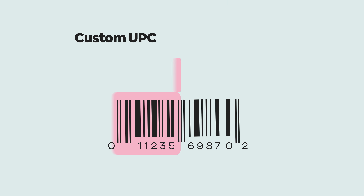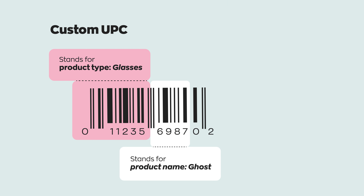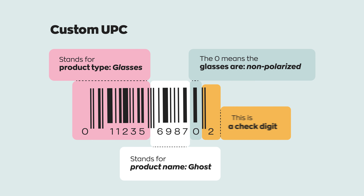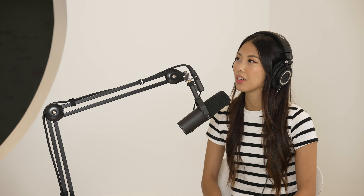The common ones we see in stores are those linear barcodes — the black and white rectangular ones. Those are generally UPCs. For the most part, it's just a way for a machine to read a code and then connect that code to a database.